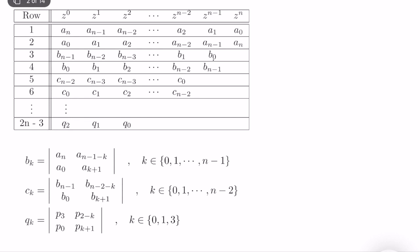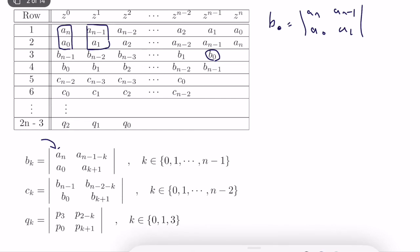Let's start by computing b0. What we do is take the first column. In computing the Jury table test, we always pick the first column — a0, a(n-1), b0 — and for b0 we pick the second column next to the first column. These two columns form a 2 by 2 matrix. So b0 is equal to the determinant of the matrix with entries an, a(n-1), a0, a1. The determinant computation is fairly easy, and we can compute b0 without any problem.